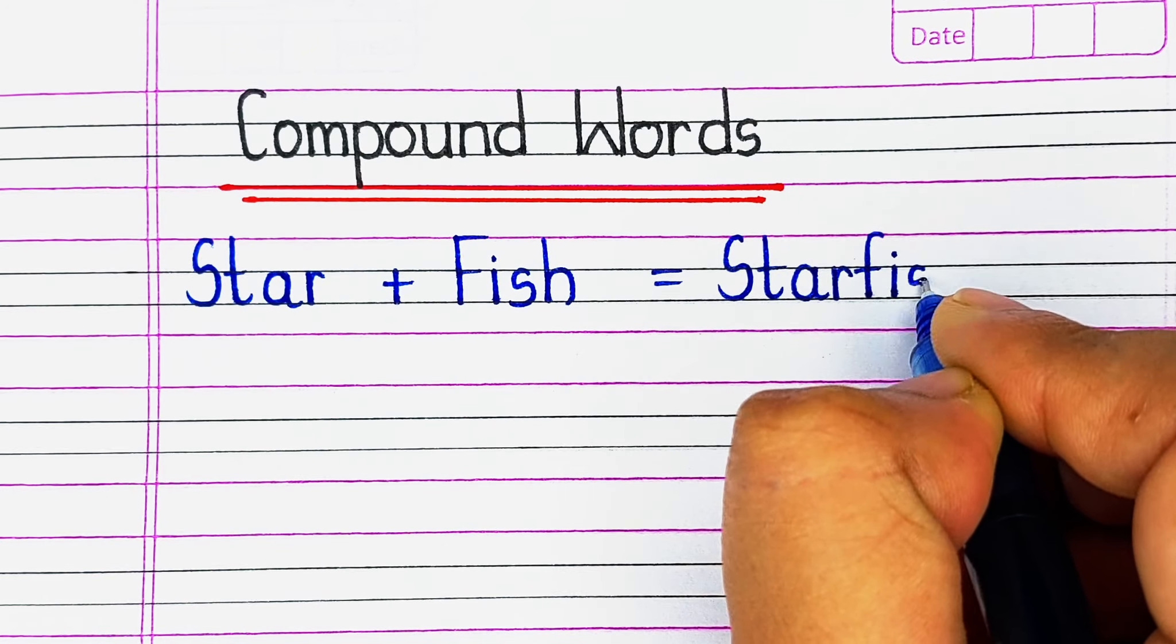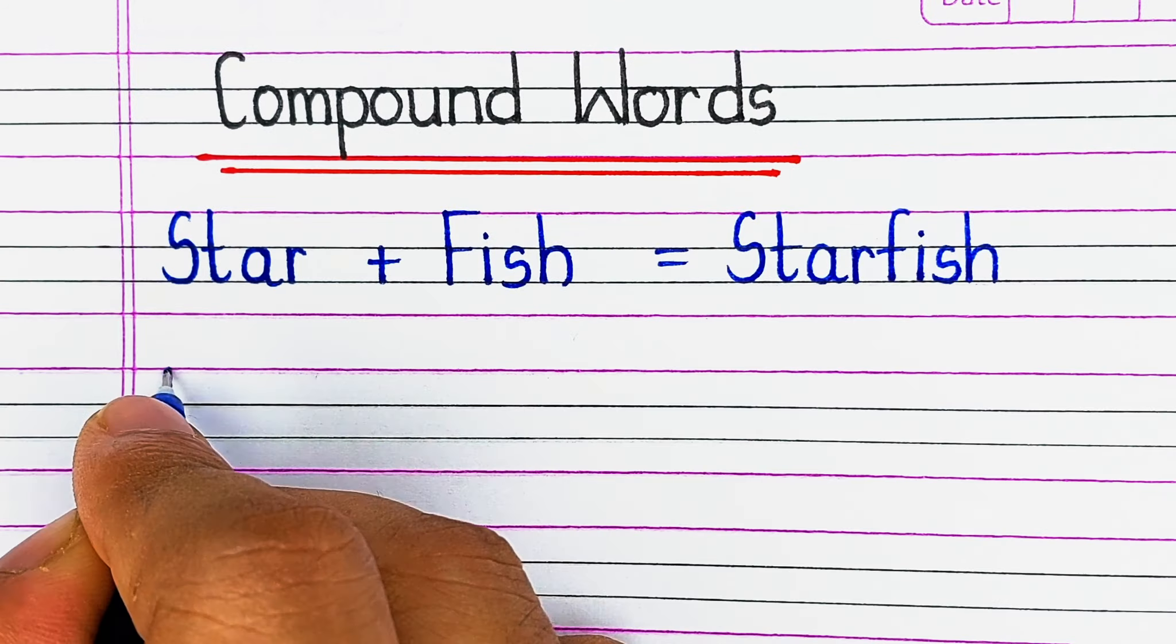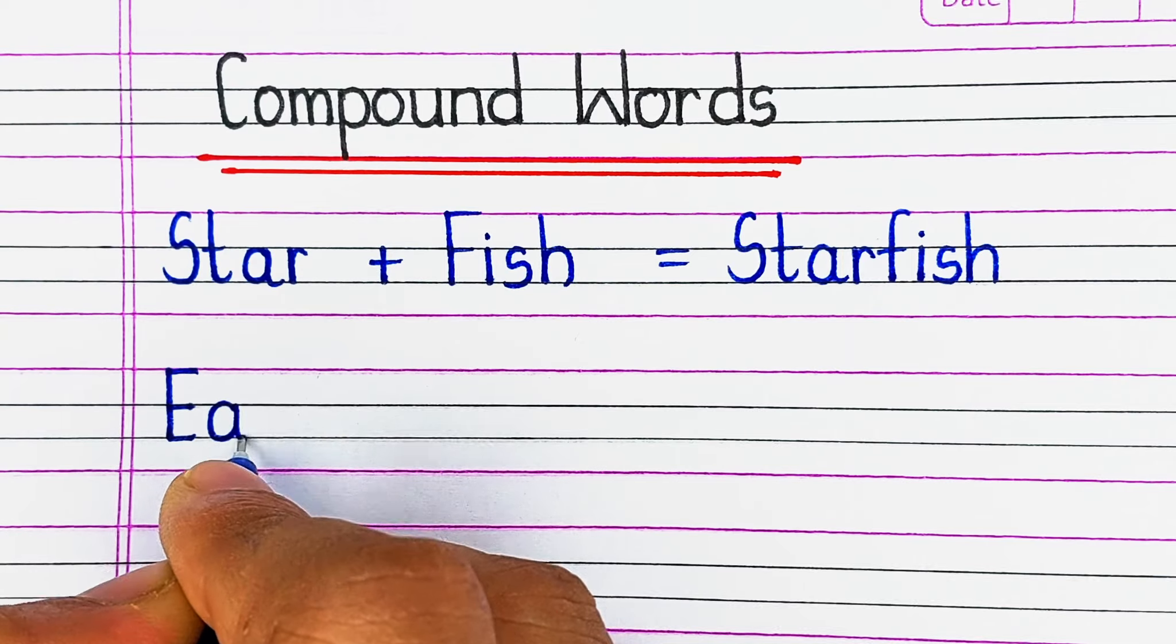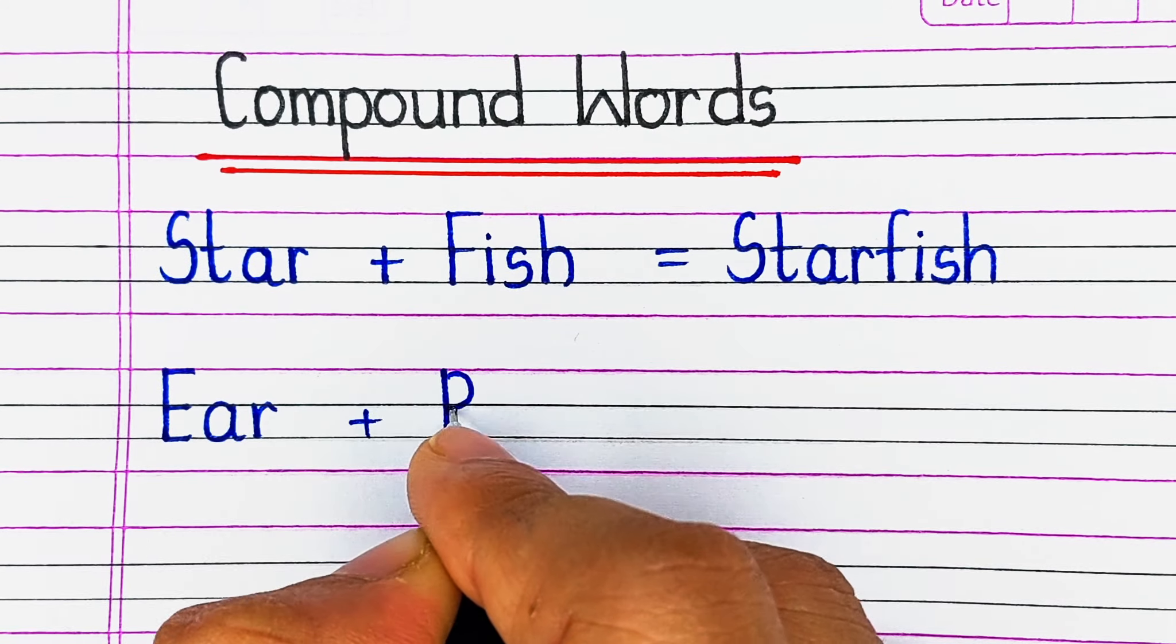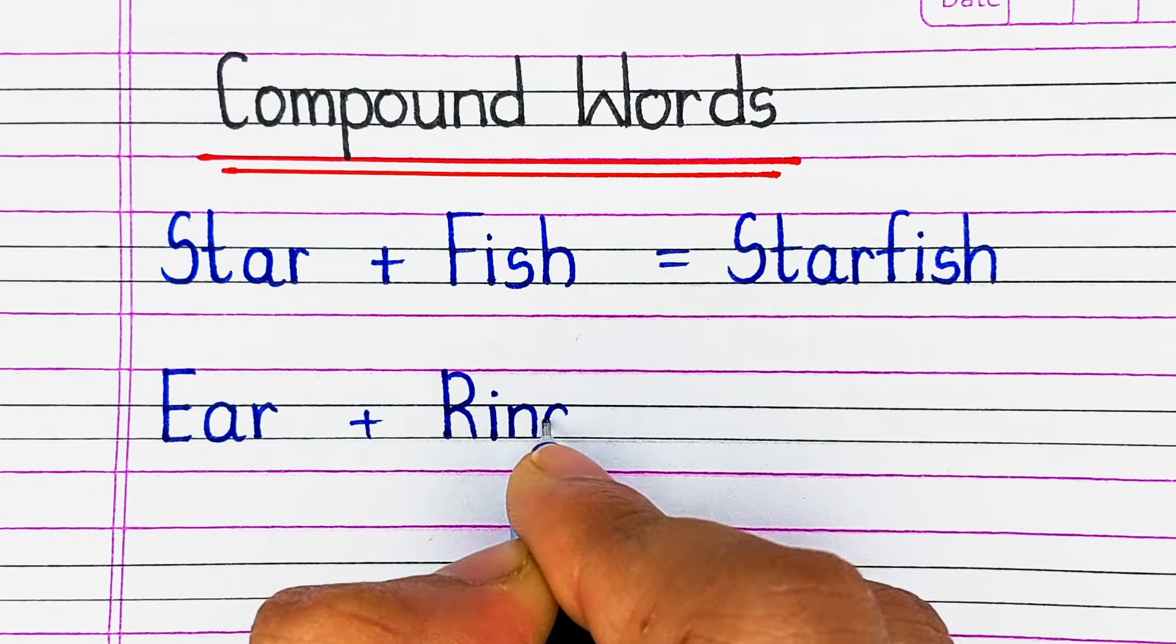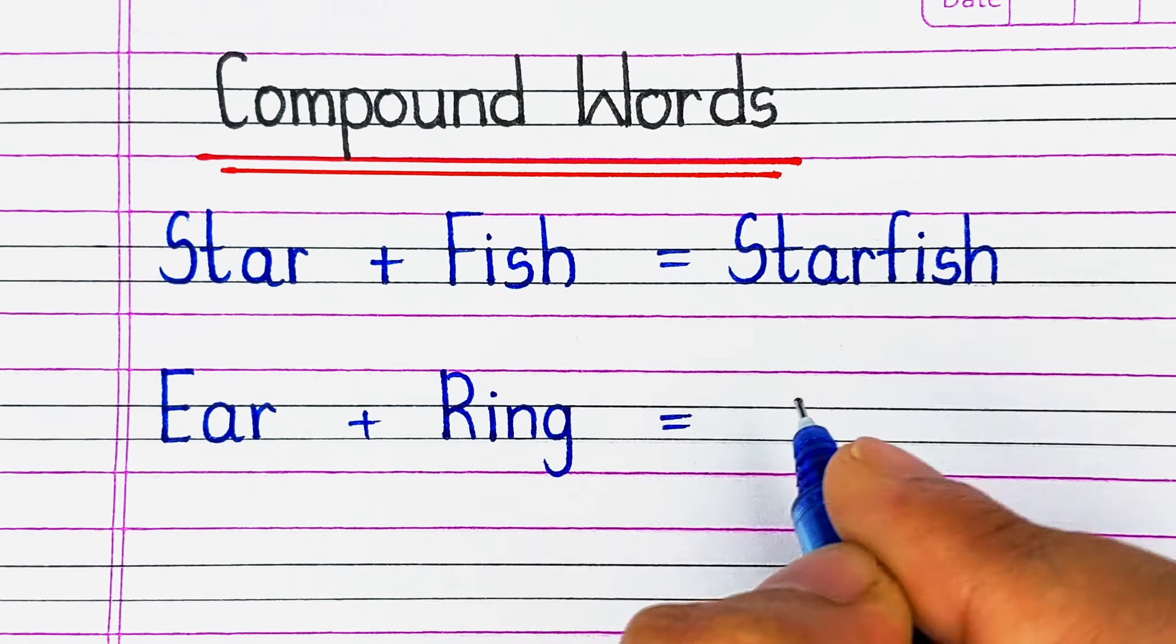Compound words are those words which are formed out of two or more root words and they behave as individual words.